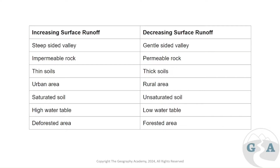Thin soils reach their maximum capacity very quickly, meaning they can't allow more water to infiltrate — they become saturated because it takes so long for percolation or through flow to happen, leading to lots of overland flow. Thick soils, on the other hand, allow for more percolation, infiltration, and through flow through the soil layer, especially without a hard bedrock layer blocking it underneath.